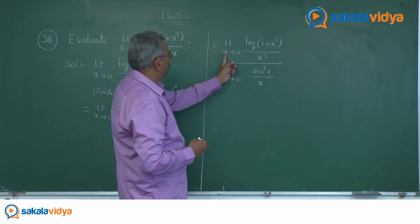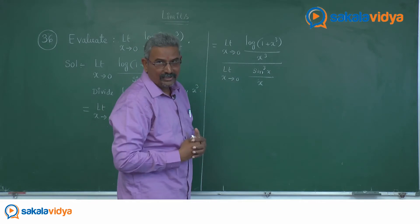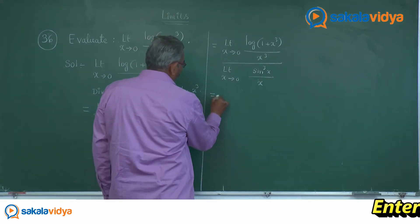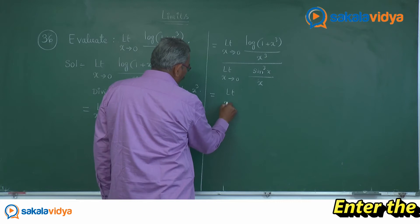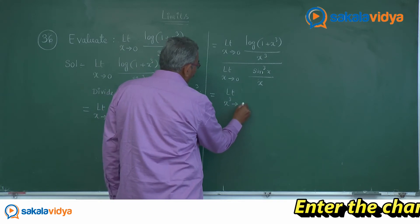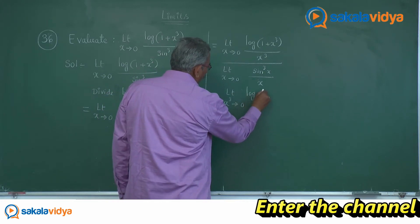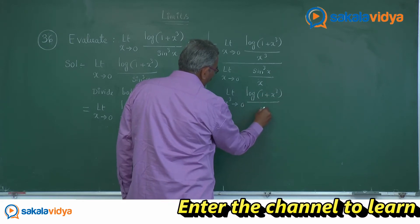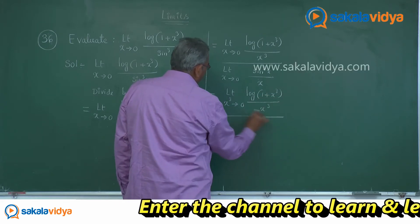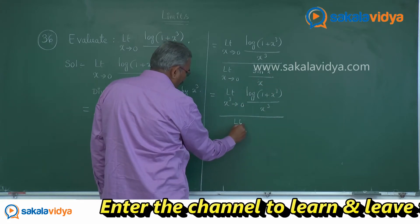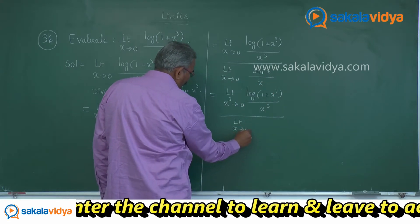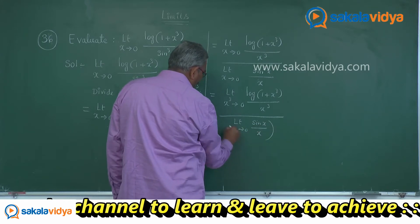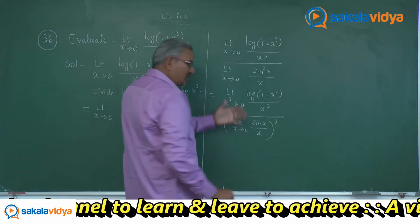As x approaches to 0, x cube also approaches to 0. So this we can write as limit x cube tends to 0 of log of 1 plus x cube by x cube in the numerator. For the denominator, this can be written as limit x approaches to 0 of sin x by x, all cubed.